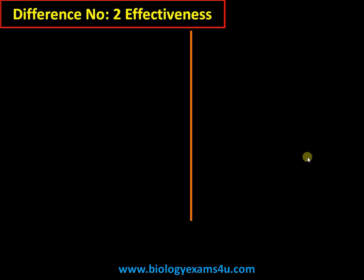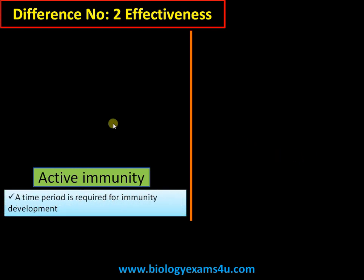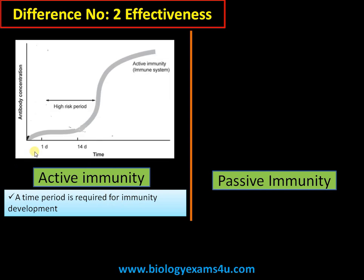Difference number two is regarding effectiveness. For active immunity to develop, there is a lag period — it requires time for immunity to develop. Whenever there is an infection and a pathogen enters the body, approximately 14 days or two weeks are required for the production of antibodies. So there is a lag period.